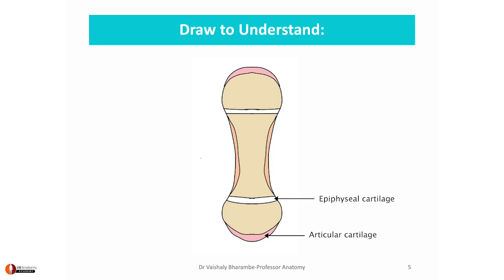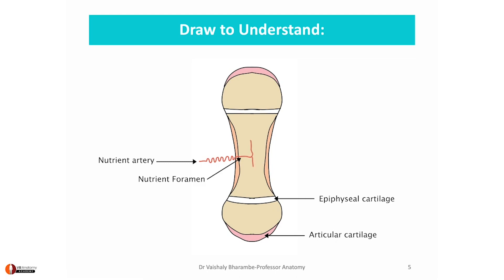So, the first artery we are going to talk about is the nutrient artery, which as it begins to travel towards the bone becomes very tortuous. It enters into the bone by passing through the nutrient foramen and immediately divides into an ascending and a descending branch. The ascending branch now gives out a lot of small branches that form hairpin-like loops in the region of metaphysis on both sides.